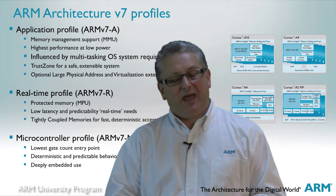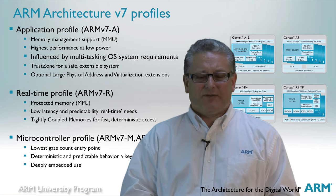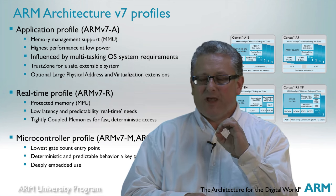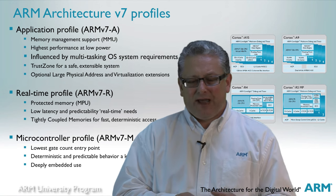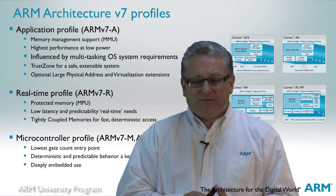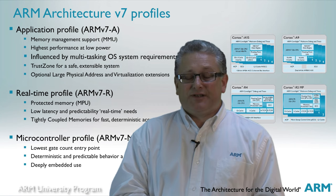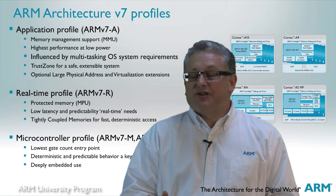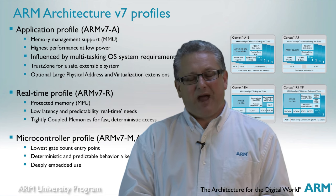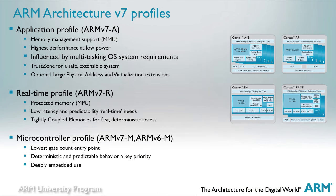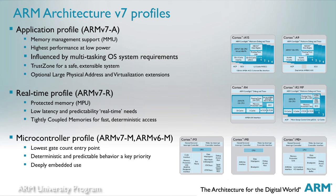Finally we come to the ARMv7M profile, which is quite different in many respects to the other two and is targeted specifically at microcontroller applications. The instruction set and programmer's model are tailored to allow very low gate count implementations, leading to very low cost devices with very low power consumption. Among other changes are a different exception handling model much closer to that found on traditional microcontrollers, and a fixed memory map which makes for much more standardization across available devices. This is currently supported by devices like the Cortex-M0 and Cortex-M3. The most recent addition is the Cortex-M0+, the smallest core ARM have ever produced.